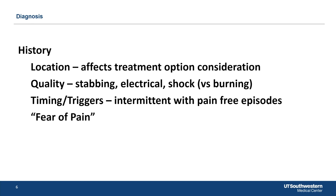In Type 2, you can have both — that chronic, burning, gnawing pain underlying it with an overlying stabbing, electrical, triggered-type pain. So the timing and triggers become an important factor: we want to have those intermittent pain-free episodes.